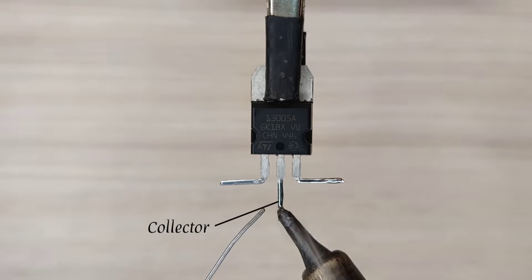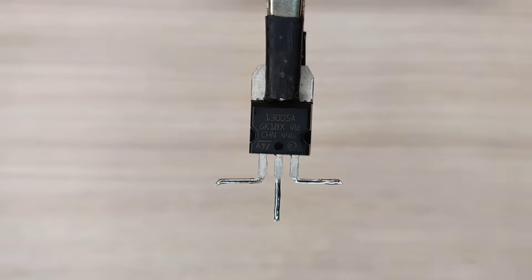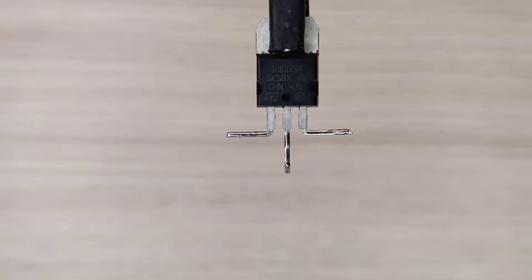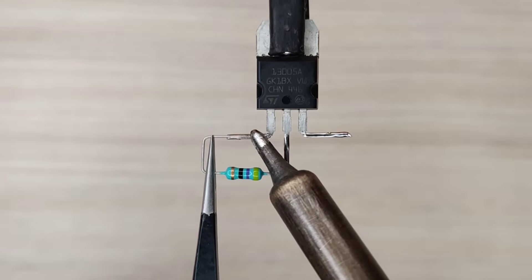For single battery, you can use this NPN transistor. Take a 47 ohms resistor, solder between pin 2 and 1 of this transistor.